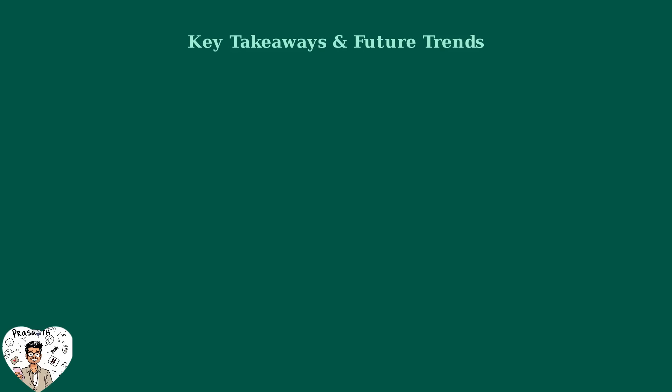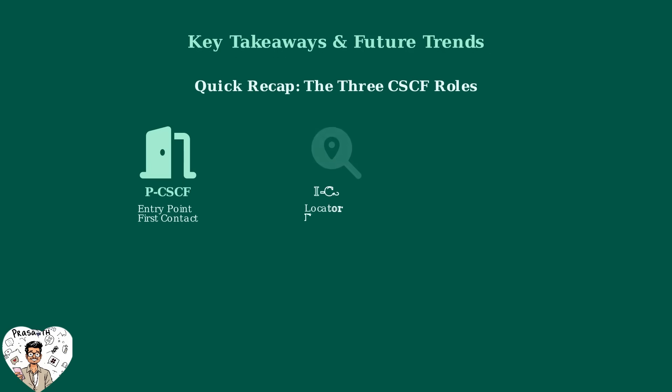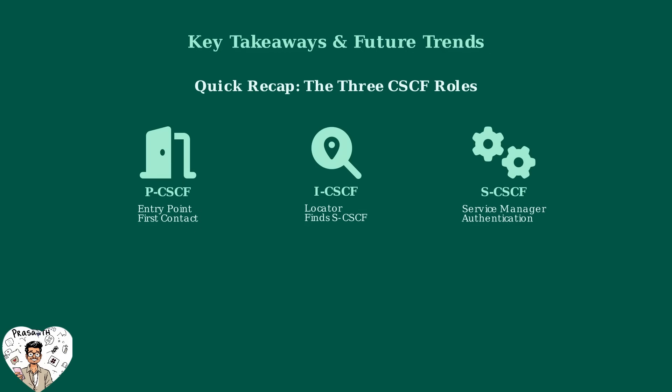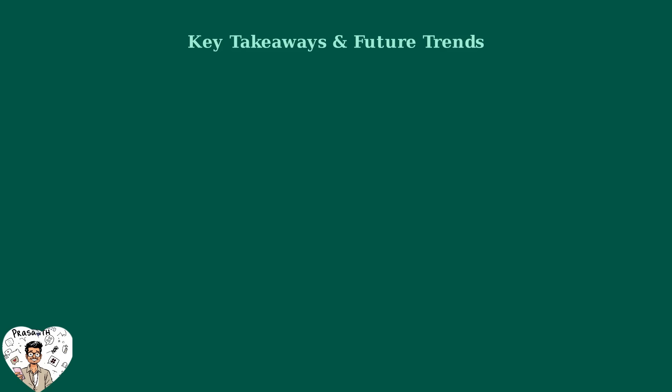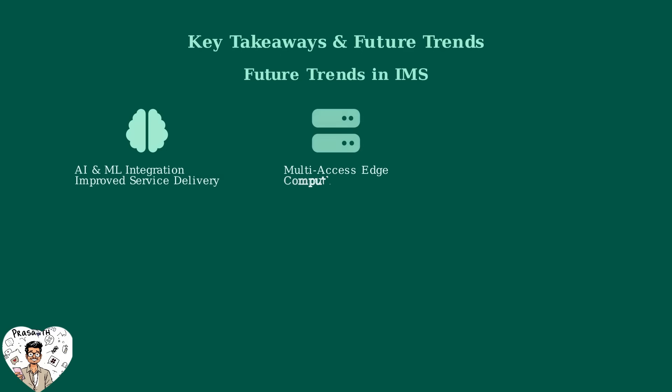Let's wrap up our journey through IMS registration by reviewing the key roles and exploring exciting future developments. To recap: PCSCF serves as your entry point and first contact, ICSCF acts as the locator finding the right SCSCF, and SCSCF manages services and handles authentication. The future of IMS is exciting — we're seeing artificial intelligence and machine learning being integrated for smarter service delivery, multi-access edge computing bringing services closer to users, and augmented reality telephone communications opening up entirely new possibilities.